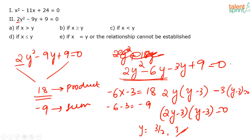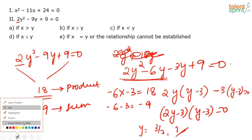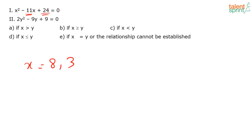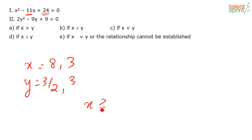For x² − 11x + 24 = 0, sum is −11 and product is 24, so the two numbers are 8 and 3, giving x = 8 and x = 3. Comparing x (8 or 3) with y (3/2 or 3), we get x ≥ y in all cases. So the answer is x greater than or equal to y.